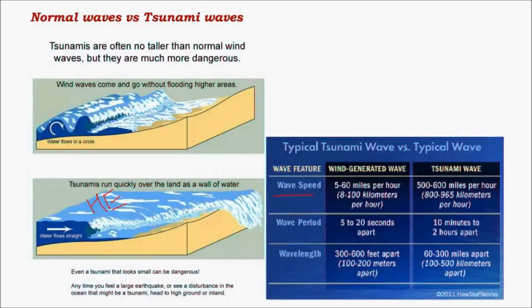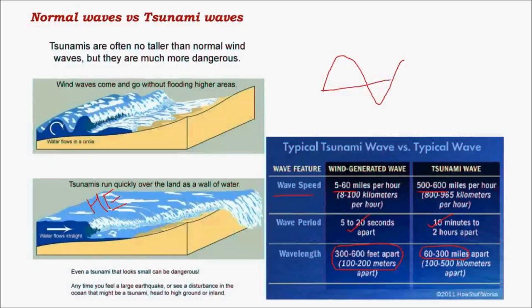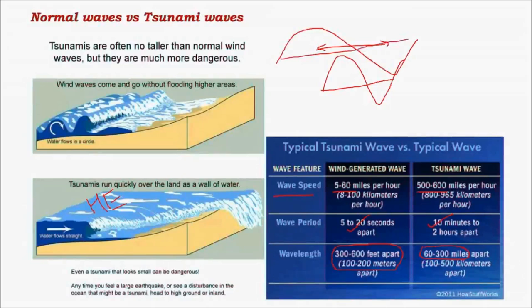The speed of typical wind-caused waves varies from 5 to 60 miles per hour, whereas tsunami waves travel at 500 to 600 miles per hour. Wind waves have a much smaller wave period, while tsunami waves have much higher wave periods. The wavelength of wind waves is only about 300 to 600 feet, whereas for tsunamis the wavelength can vary across miles. Wavelength is the distance between two crests, and tsunami crests can be 300 to 400 miles apart from each other.